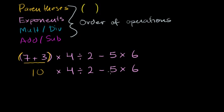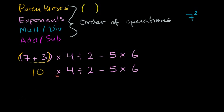There are no more parentheses. Then we check for exponents — exponents look like a small number in the top right, like 7 squared. We don't have any here. Then it says do multiplication and division next. We have a multiplication, a division, and another multiplication. When you have multiple operations at the same level, you go left to right. So we multiply by 4 first, then divide by 2 — we won't multiply by 4 divided by 2 together. And we'll do 5 times 6 before the subtraction.